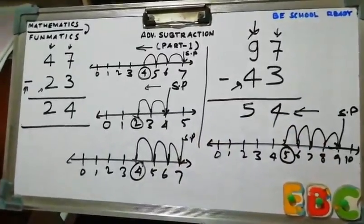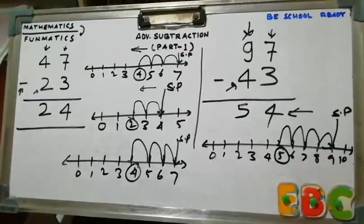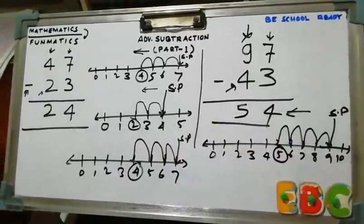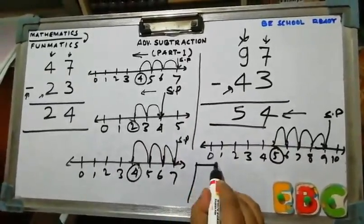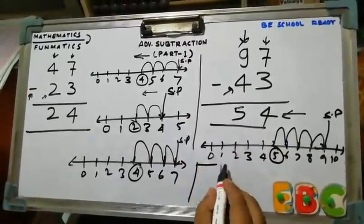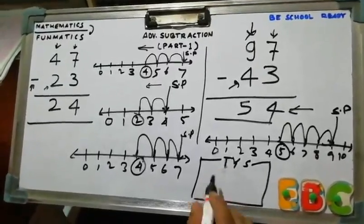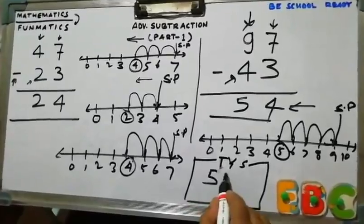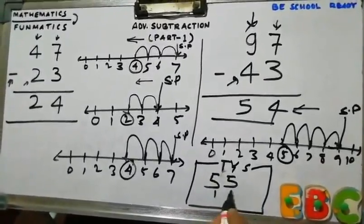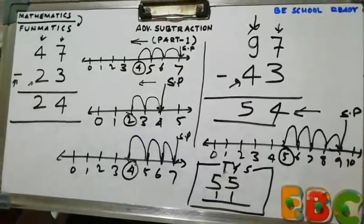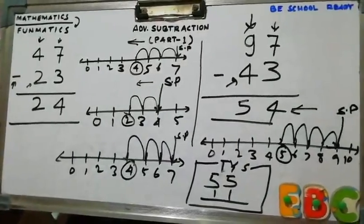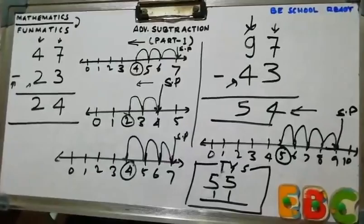So 97 minus 43 is 54. Now, try yourself section. You have to do yourself 55 minus 11. Do it yourself and put your answer in the comments. See you in the next video.